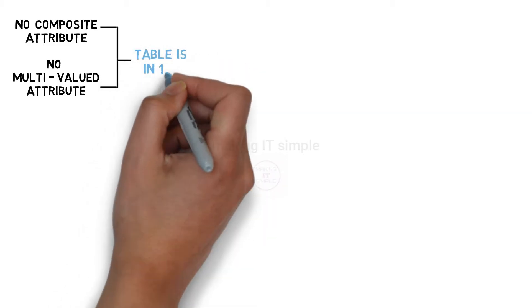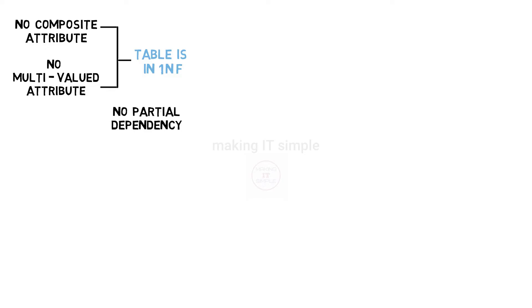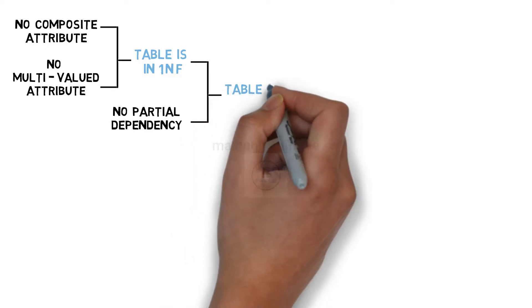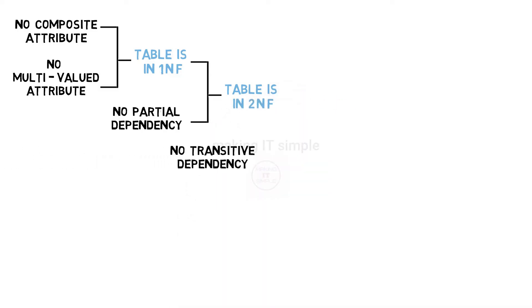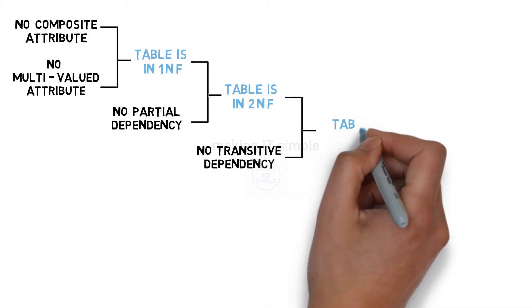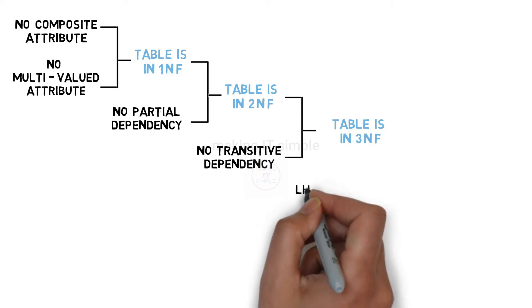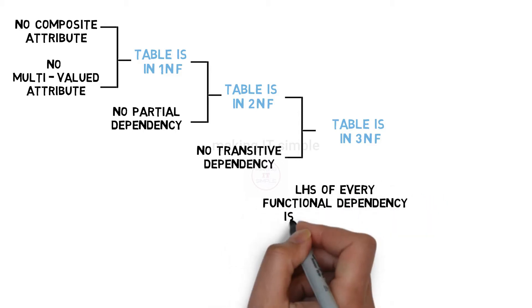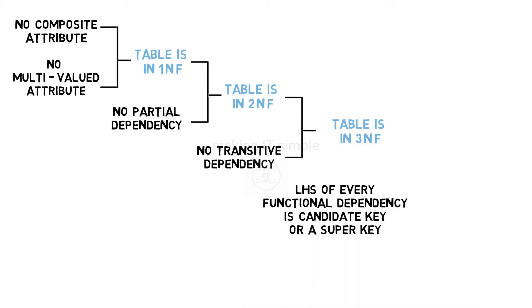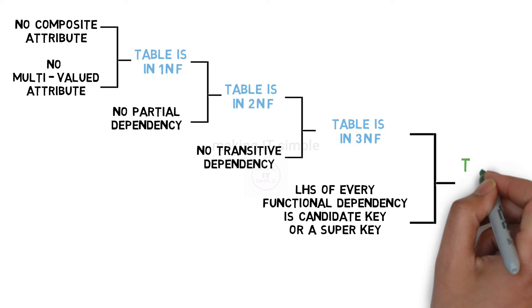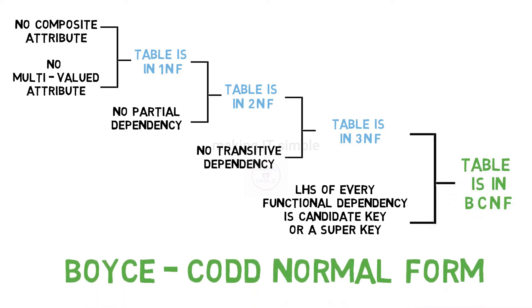If a table does not have any composite attribute and multivalued attribute, then these two conditions mean that the table is in first normal form. If a table does not have partial dependency and it is in first normal form, then it is in second normal form. If a table does not have any transitive dependency and it is in second normal form, then it is in third normal form. Finally, if a table is in third normal form and the left-hand side of every functional dependency is a candidate key or super key, then the table is in Boyce-Codd normal form or BCNF. Let us simplify using examples.